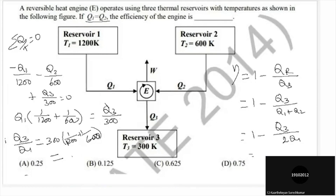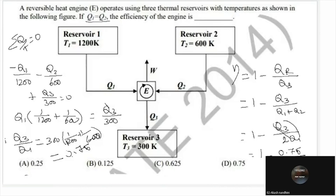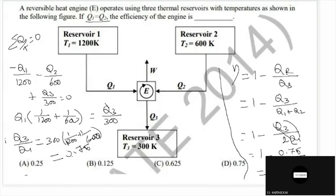Q3 by Q1 equals 0.75. Efficiency equals 1 minus 0.75 divided by 2, which equals 0.625. Answer: C, 0.625.